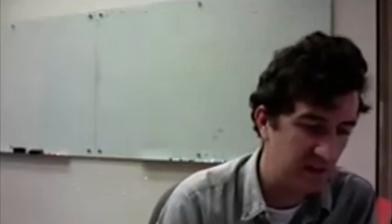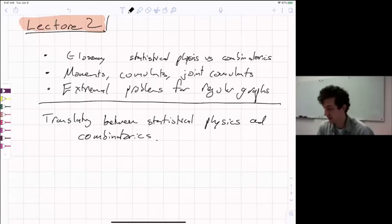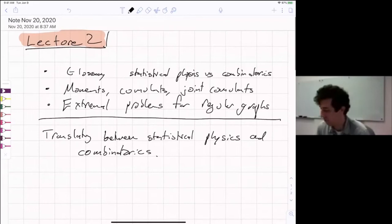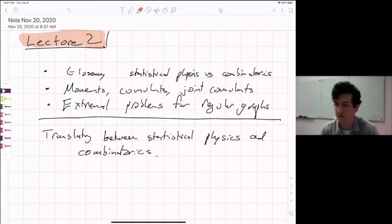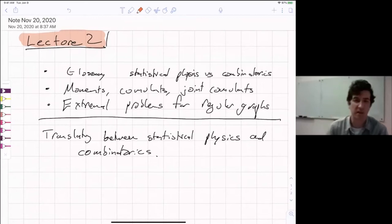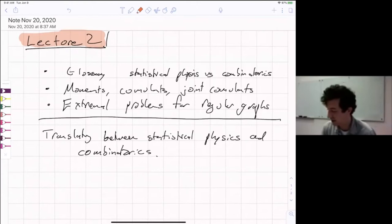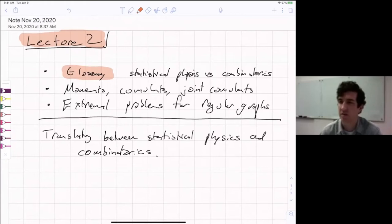Welcome back everyone. Please click on the new link to the lecture notes that Andre has put in the chat — it's updated, there's a section two and so on. Let me share my screen. This is lecture two. I want to finish a couple of things from section one of the notes. The first — and maybe this is the most important thing of all these lectures — is to give you a glossary to translate between statistical physics and combinatorics.